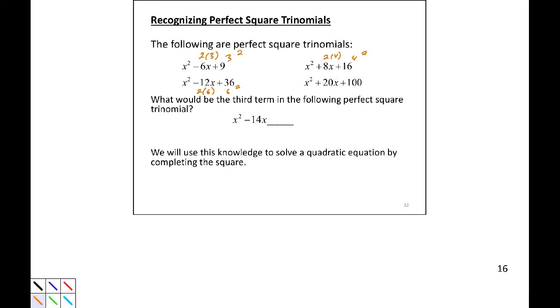So we can apply that to this question. This would be half of negative 14 is negative 7, square that is plus 49. And because we're squaring, that last term is always positive.